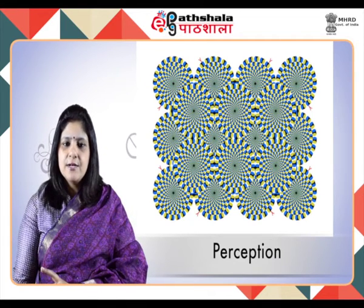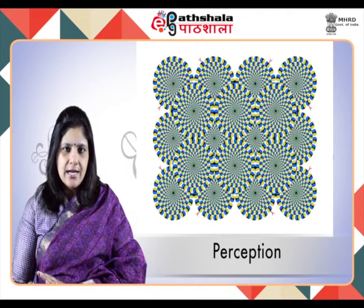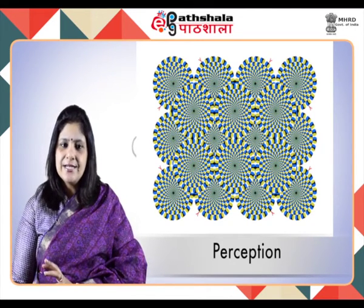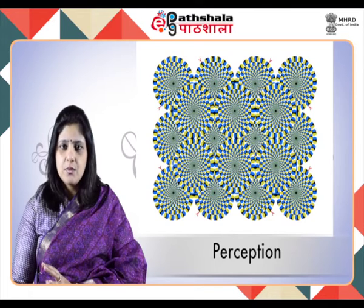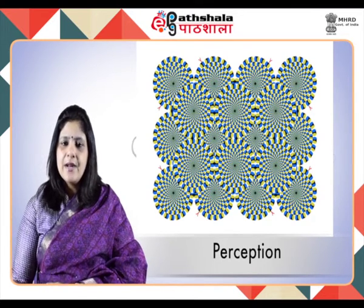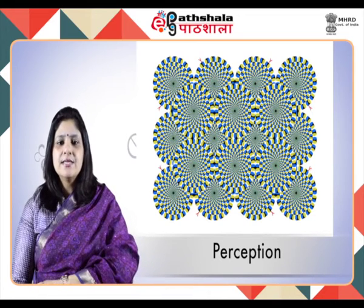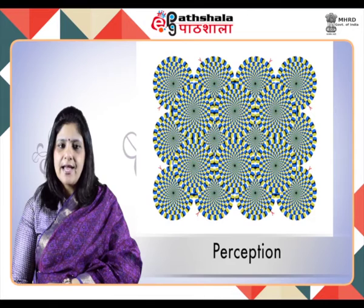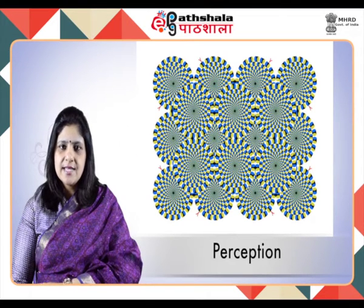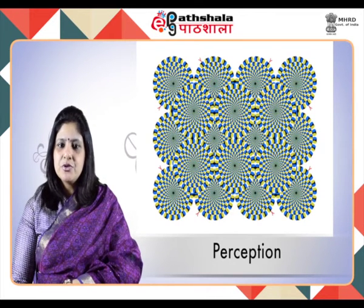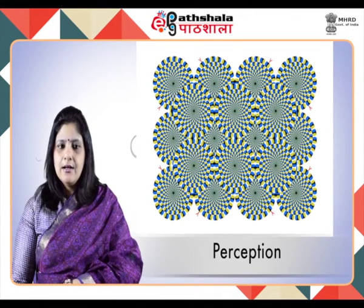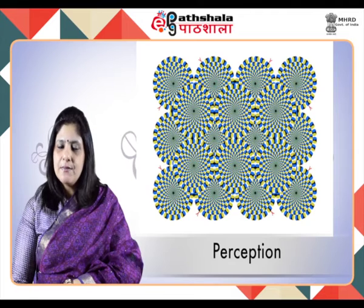To understand perception, we must first understand sensation. Sensation refers to the initial detection and processes of sensory mechanisms — involving the eye, ear, and so on — and the stimuli that affect those mechanisms. Perception, on the other hand, involves higher-order cognition in the interpretation of sensory information. While sensation involves initial detection, perception means interpretation of what we sense around our surroundings.